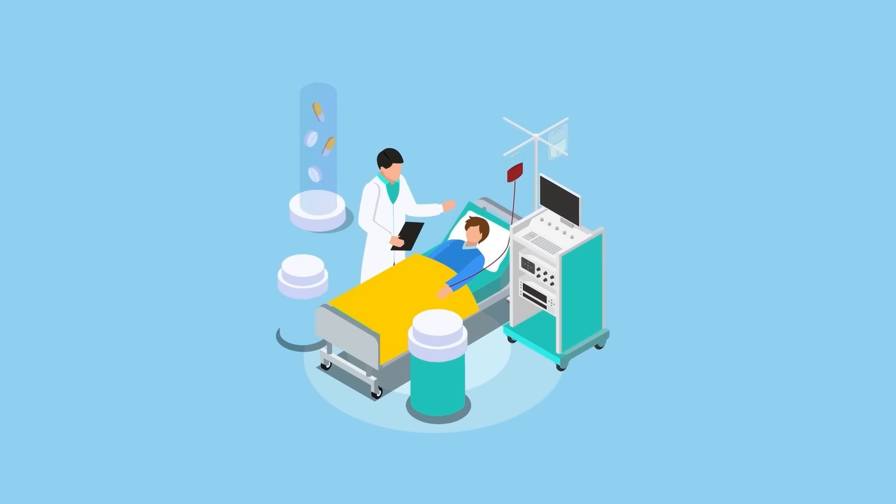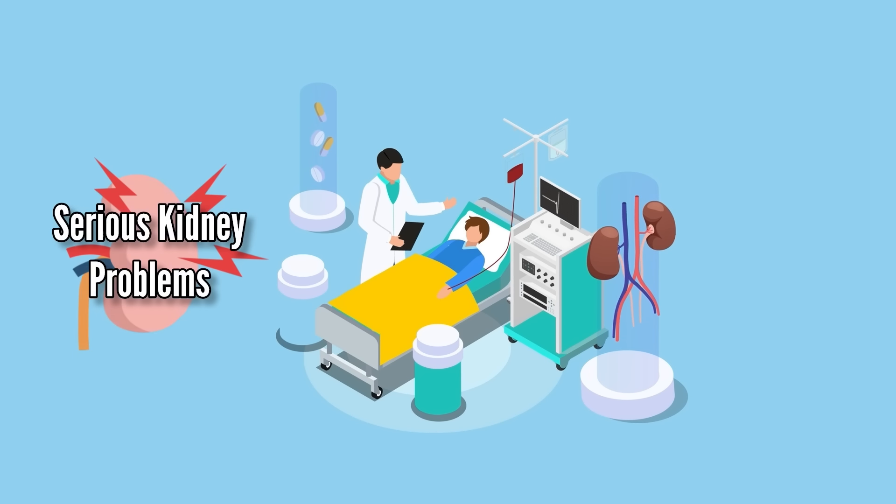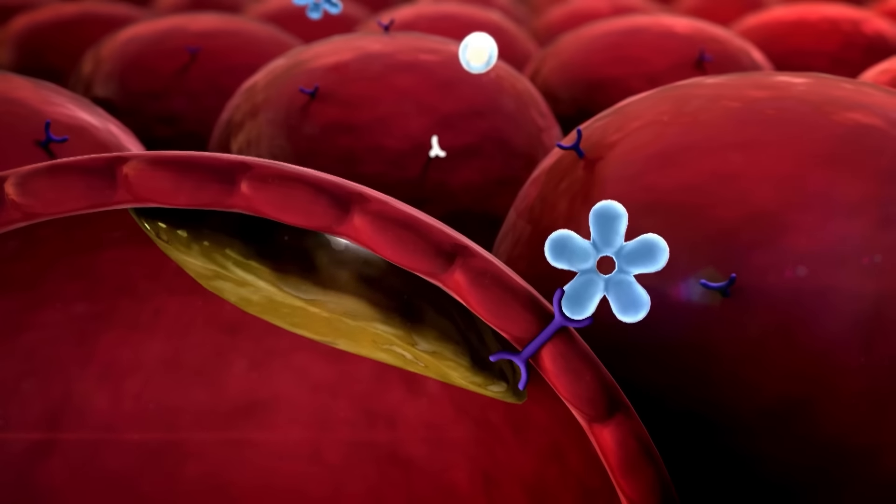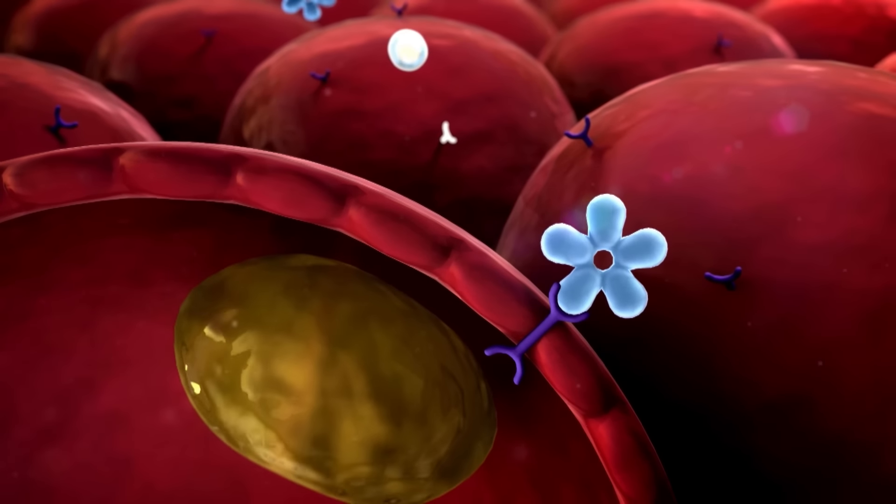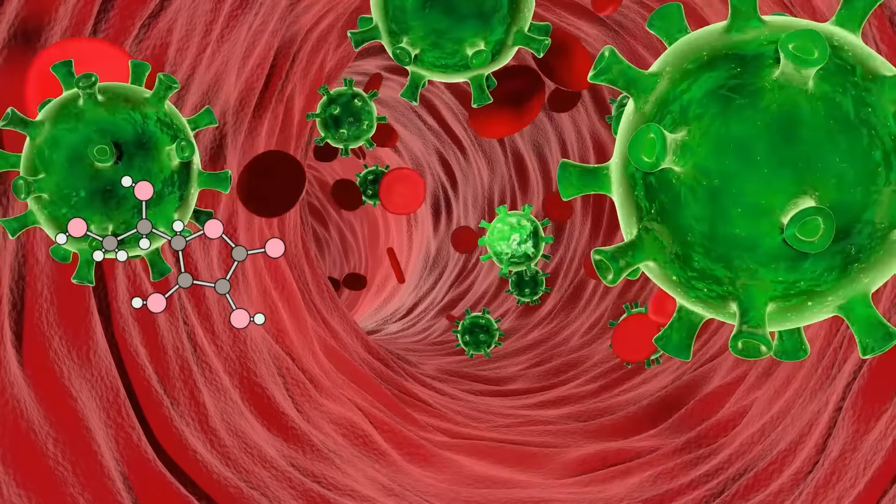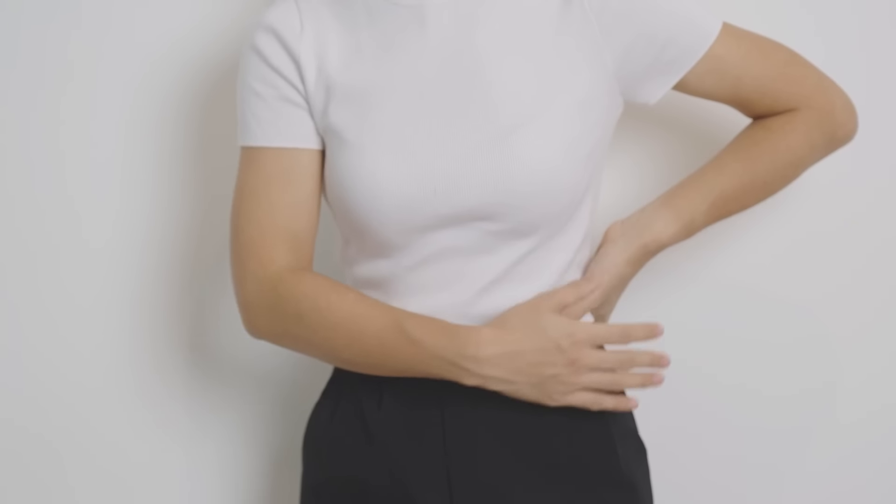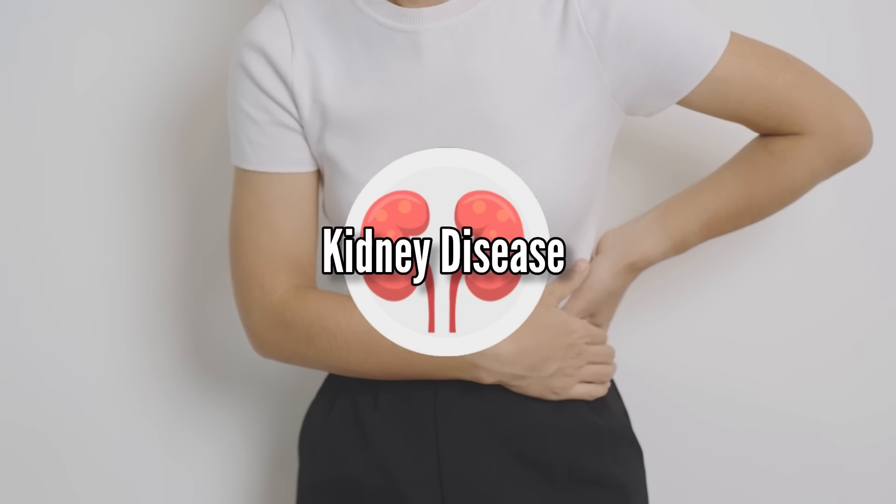And surprisingly, some studies show that people with serious kidney problems can even avoid dialysis for up to eight years with its help. Anyhow, being a soluble fiber, acacia fiber helps prevent too much bad stuff from getting absorbed in your bloodstream, like uremic toxins, which can be particularly good for you if you have kidney disease.